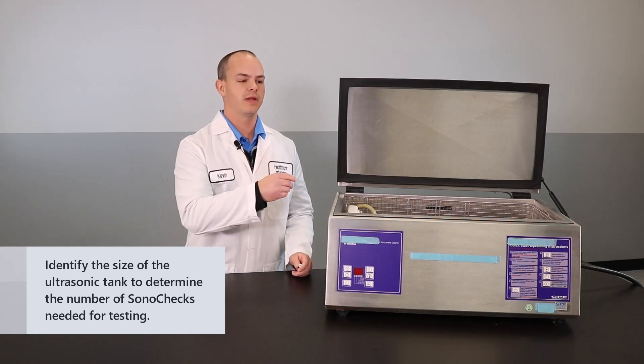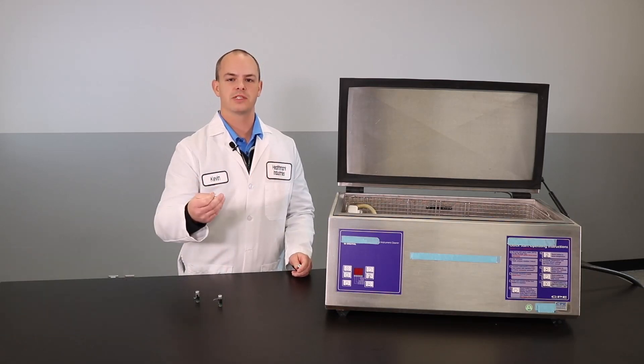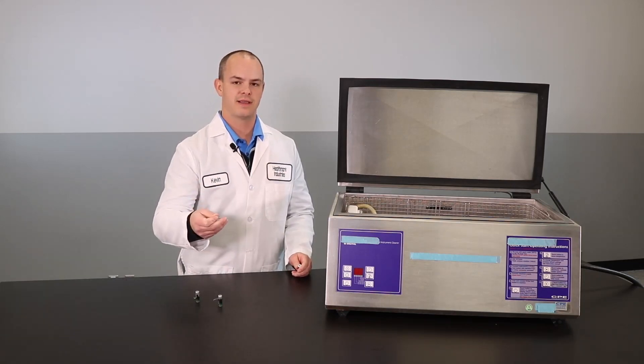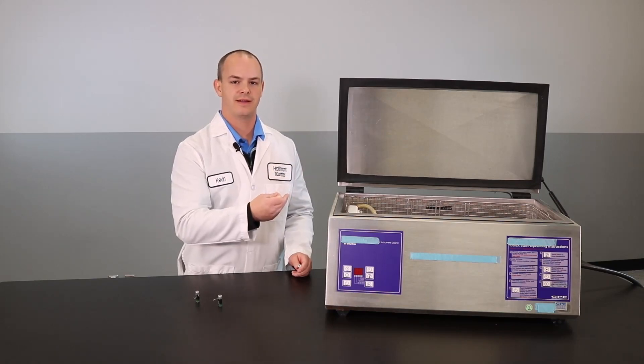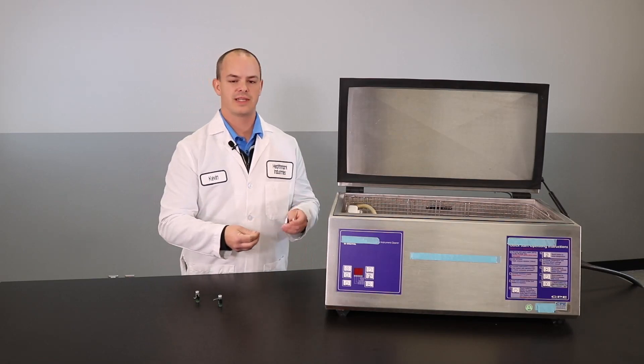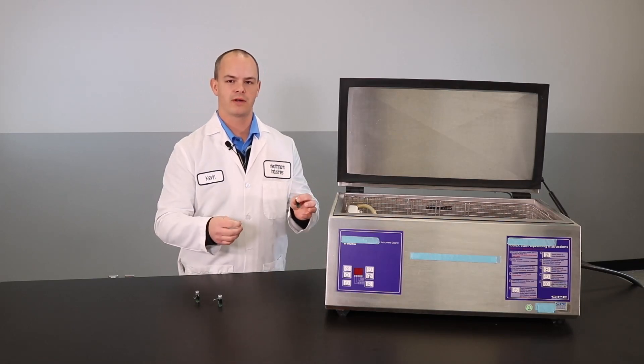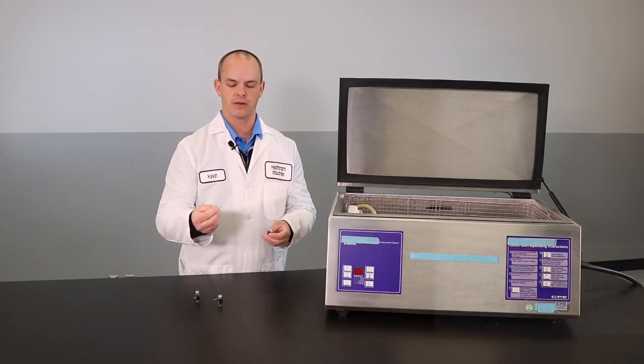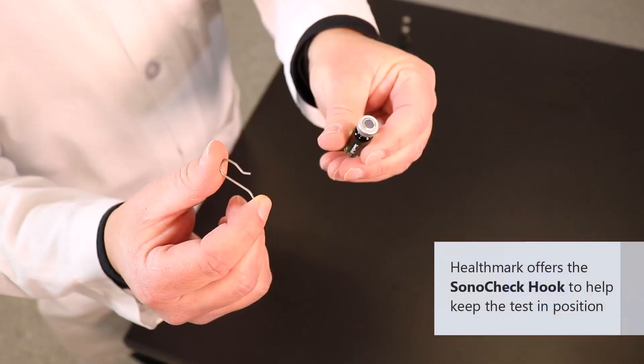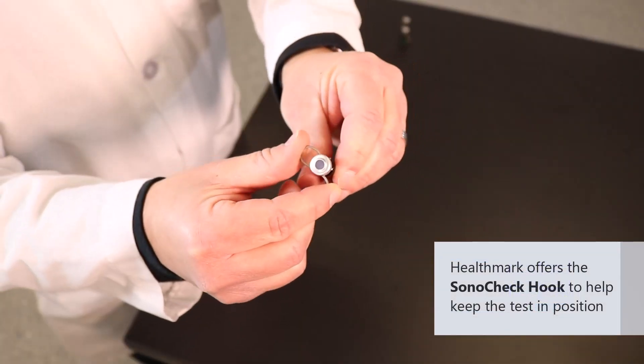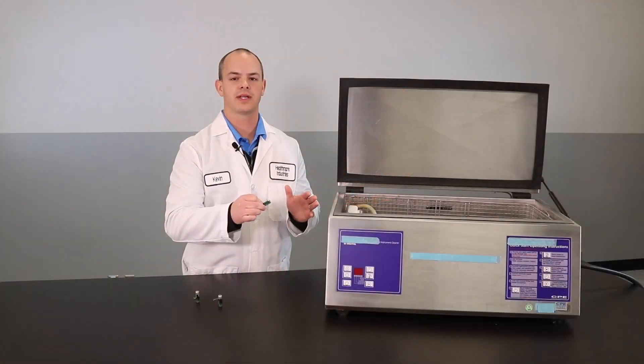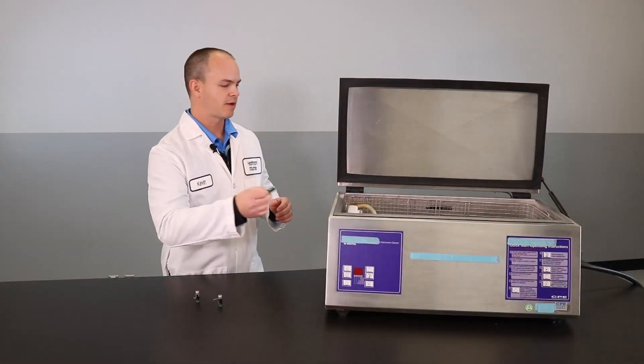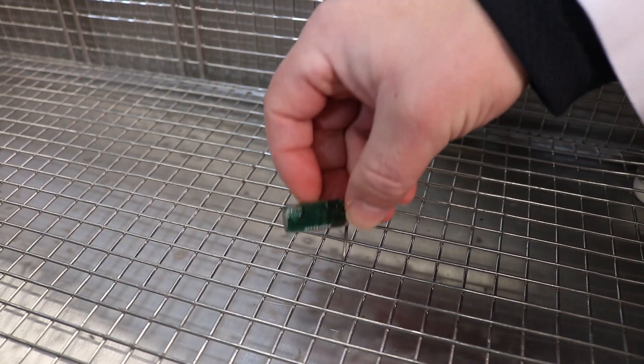All right. So in this tank, for regular performance qualification, daily testing, we are going to recommend that you put three SonoCheck tests in there. Now, the bottom of this tank has a nice wire basket inside, and we're going to put a hook onto our SonoCheck test to make sure that it doesn't move around while the ultrasonic cycle is in process. So I'm going to go ahead and put those in there.